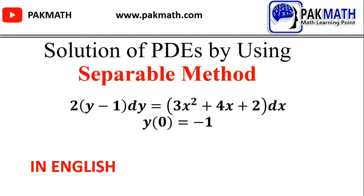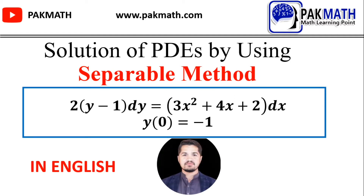Today's question for discussion is: 2(y − 1) dy = 3x² + 4x + 2 dx. The given condition is y(0) = −1.